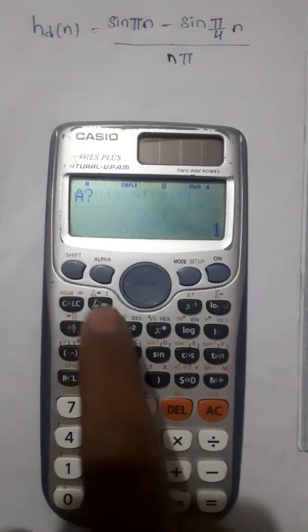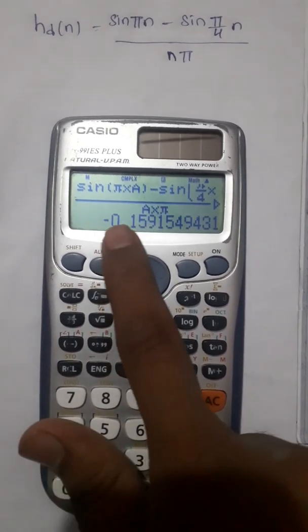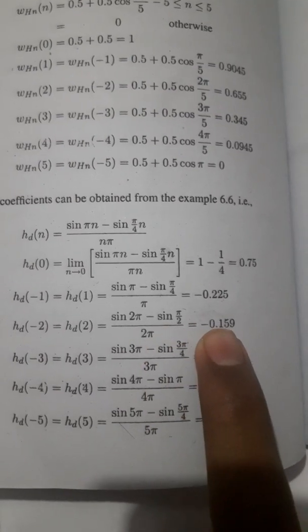Also substituting the value 2, we get -0.159, which matches the textbook value of -0.159.